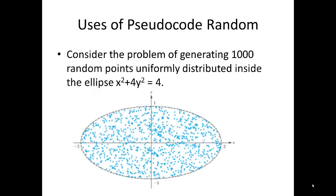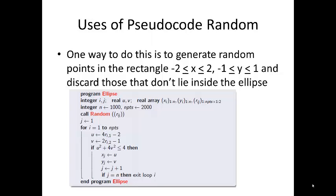Consider the problem of generating 1,000 random points uniformly distributed inside the ellipse X squared plus 4Y squared is equal to 4. One way to do this is to generate random points in the rectangle where X lies between minus 2 and 2 and Y lies between minus 1 and 1, and we discard those that don't lie inside the ellipse. That's precisely what this pseudocode does.